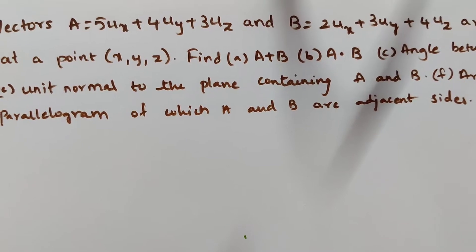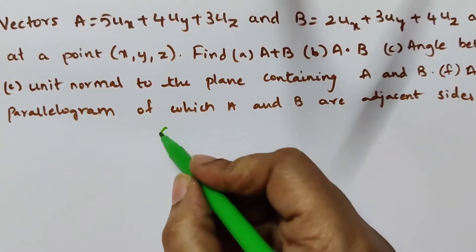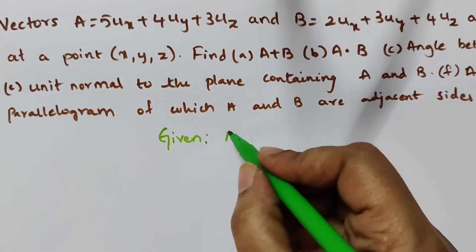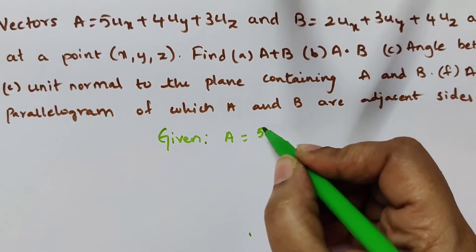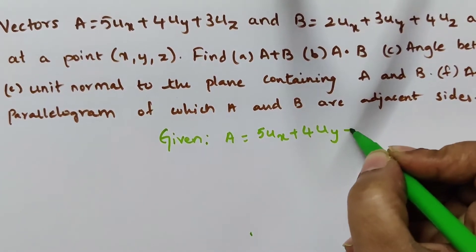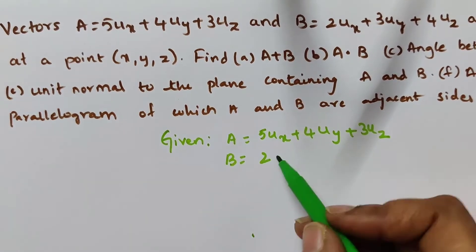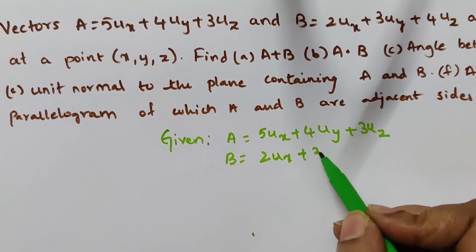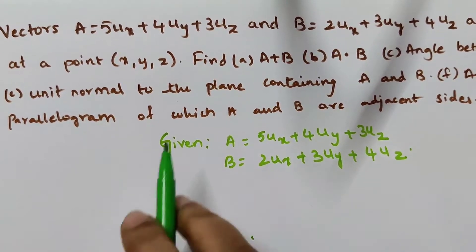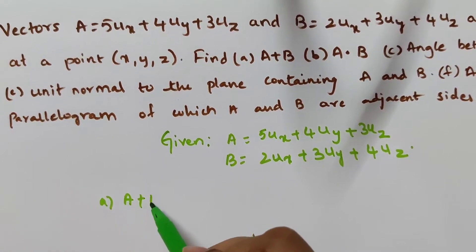Before starting any problem, write the given conditions. Given: A = 5ux + 4uy + 3uz, and B = 2ux + 3uy + 4uz. The first part asks us to find A plus B.